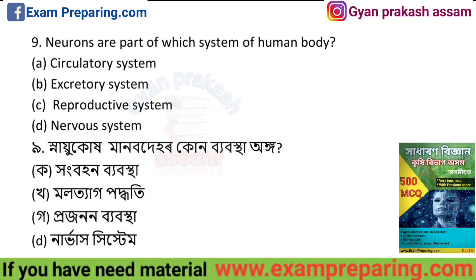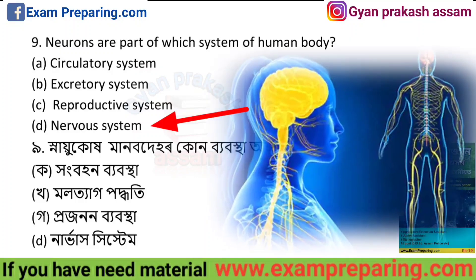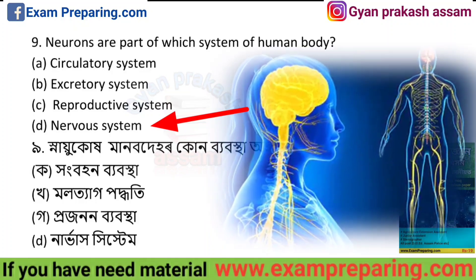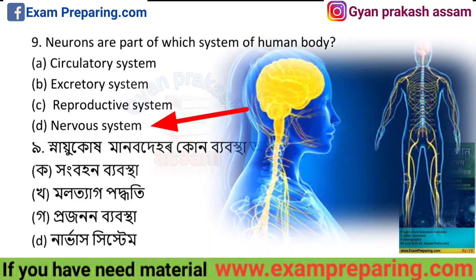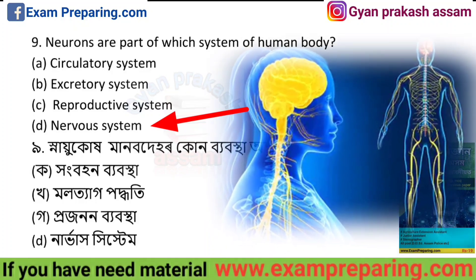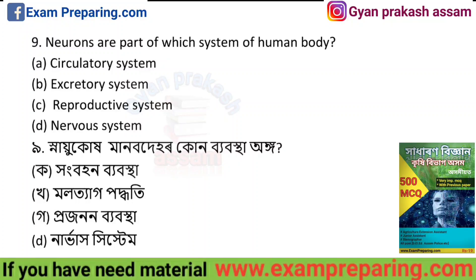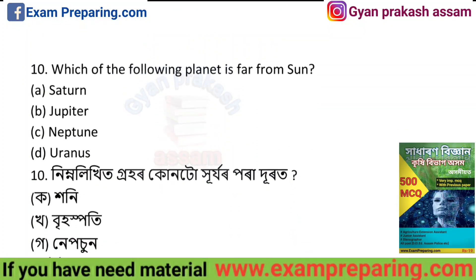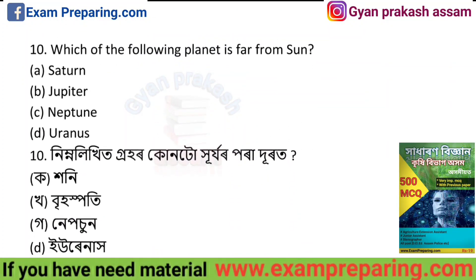Neurons are part of which system of the human body? The answer is the nervous system. Next question: which of the following planets is farthest from the sun?